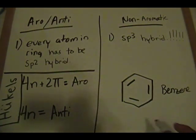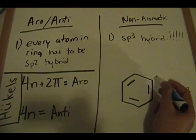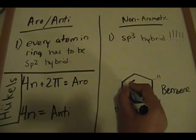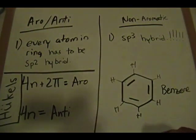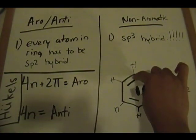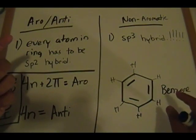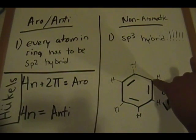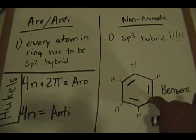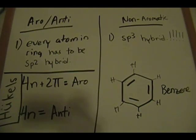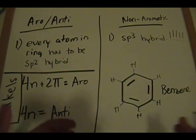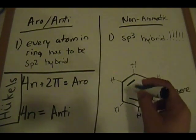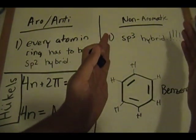Let's go through that — sp2, sp2, sp2. Because there's one H here, you should be comfortable labeling things sp2. If you have three things attached to a central atom it's sp2; if you have four things attached it's sp3. The central atom in the ring has an H attached, a carbon here, and another carbon here — so it's sp2 hybridized. In the benzene ring, everything is sp2 hybridized, so we move away from the non-aromatic category.